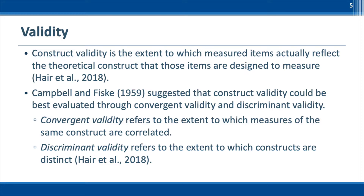Convergent validity refers to the extent to which measures of the same construct are correlated. In other words, it provides empirical evidence that items that are indicators of a specific construct should converge or share a high proportion of variance in common. Discriminant validity refers to the extent to which constructs are distinct. Discriminant validity provides empirical evidence that a construct is unique and captures some phenomena that other constructs do not.